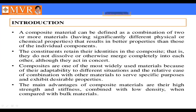After merging the materials equally and perfectly, we can use this kind of material to manufacture parts. Composites are one of the most widely used materials because of their ability to be combined with other materials to serve specific purposes and exhibit desired properties.